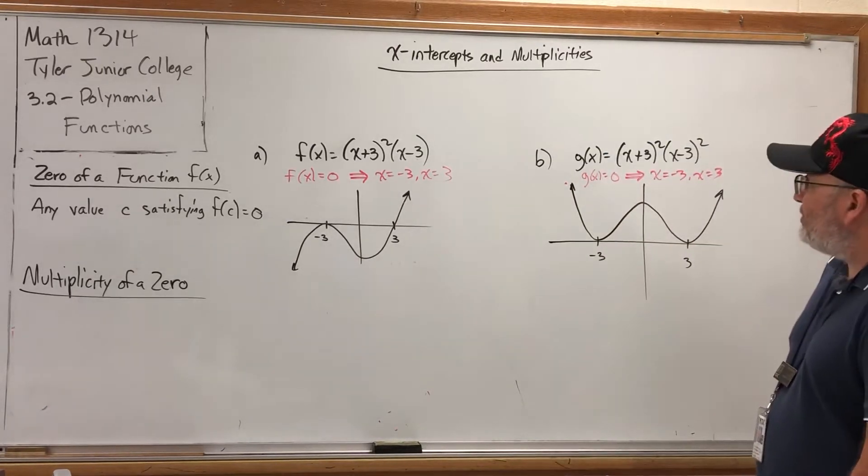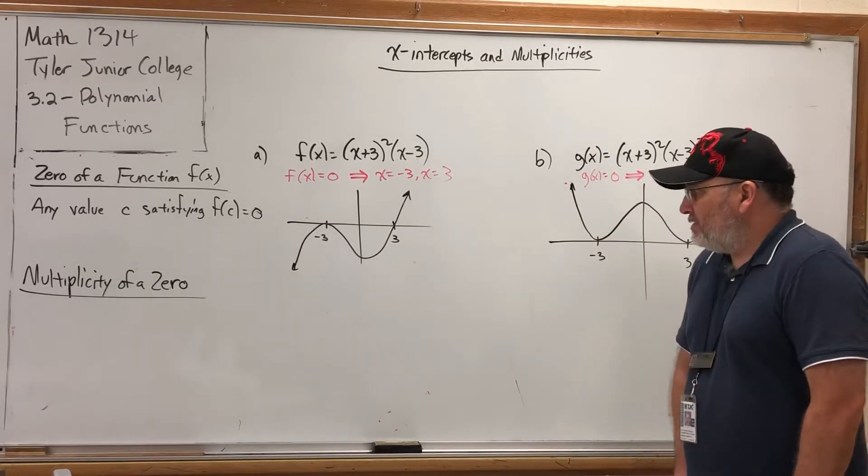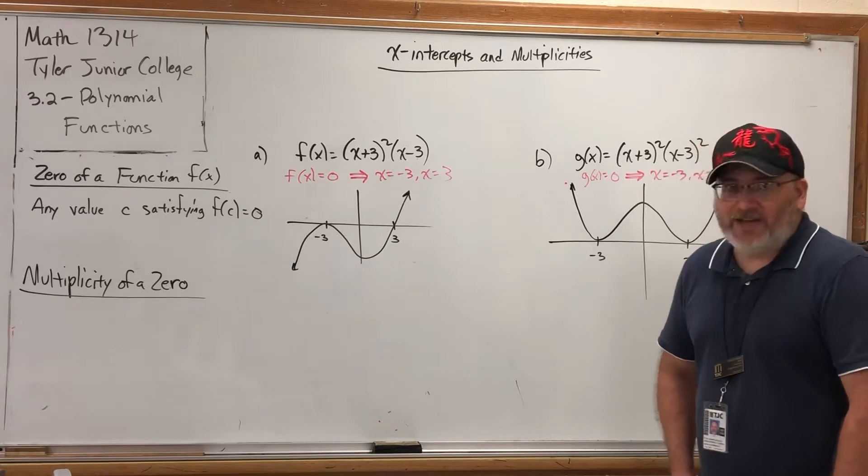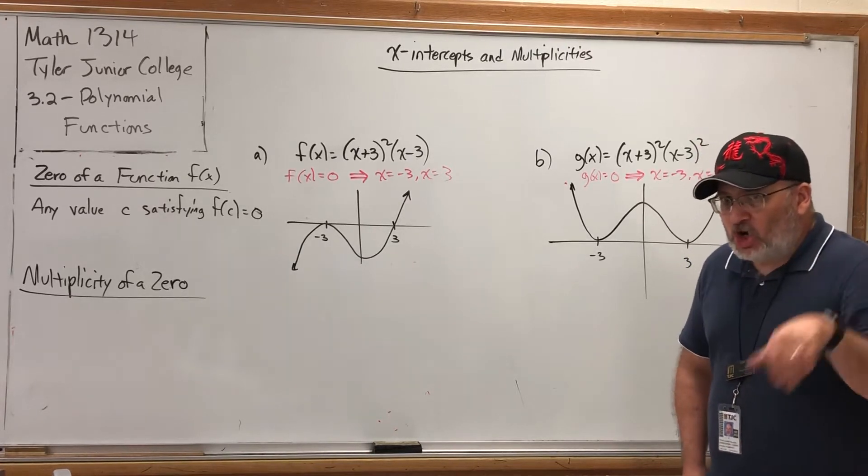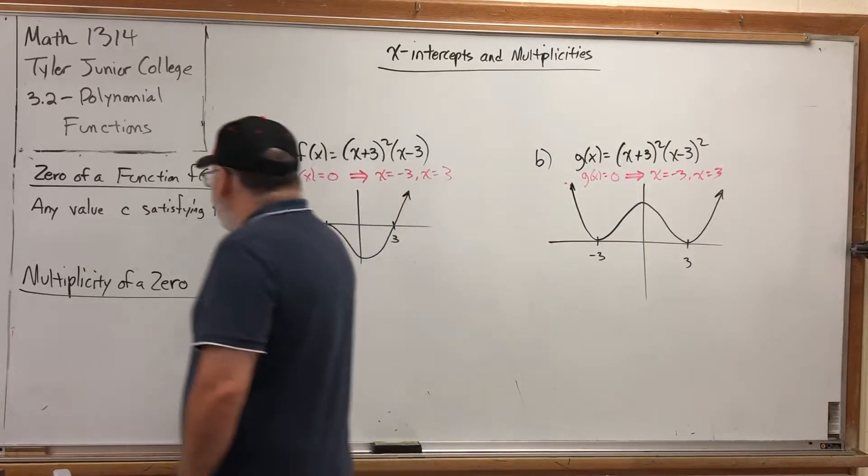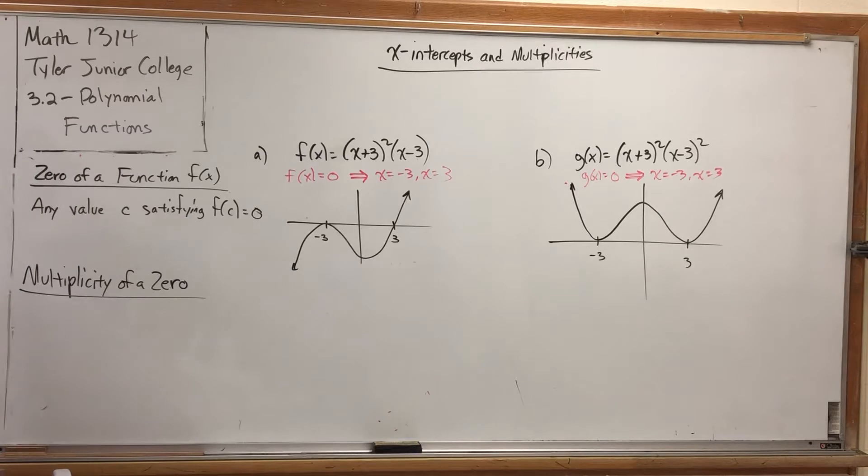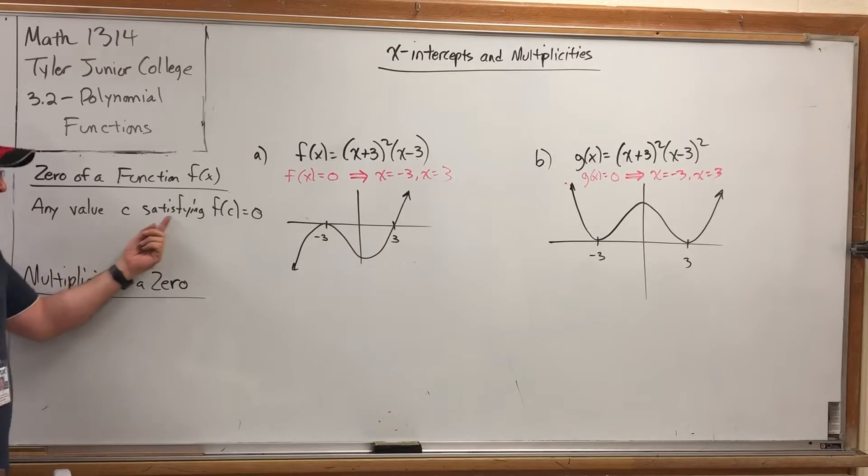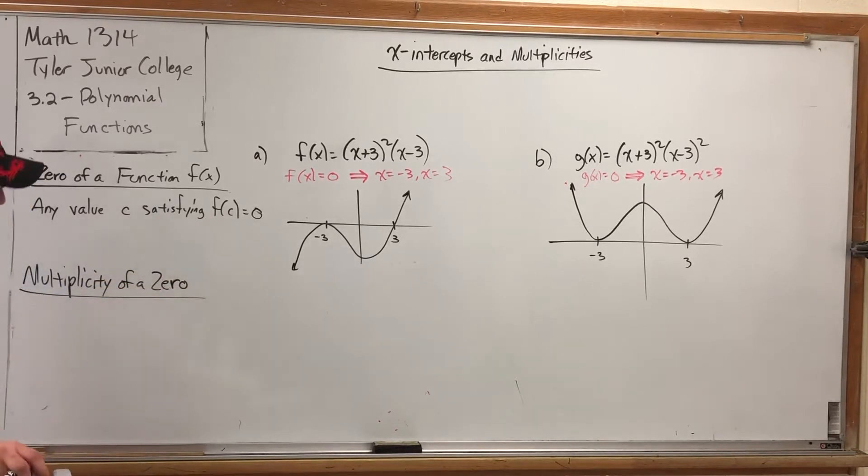But in order to discuss how you can predict if a graph will cross the X-Axis at an X-Intercept versus touch it and turn, I need to introduce two terms to you. One of which I could have introduced a long time ago, but better late than never. It's called the zero of a function, F of X. A zero of a function is any value, we'll call it C, satisfying F of C equals zero. So relative to a function, a zero is an input that produces an output of zero.